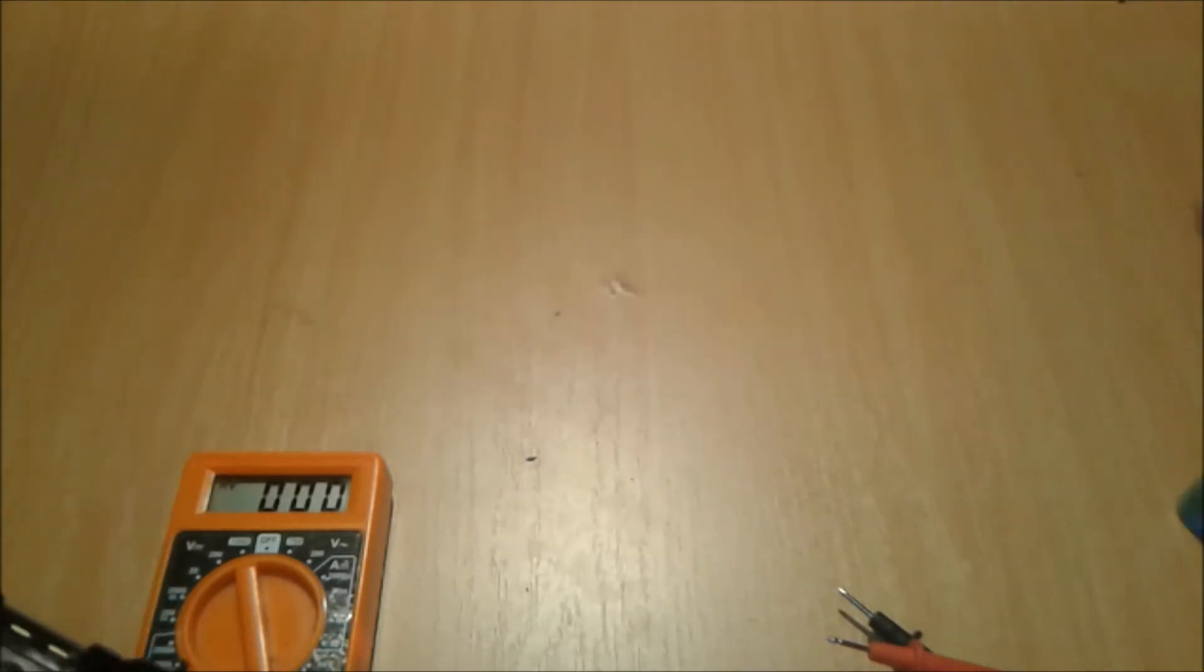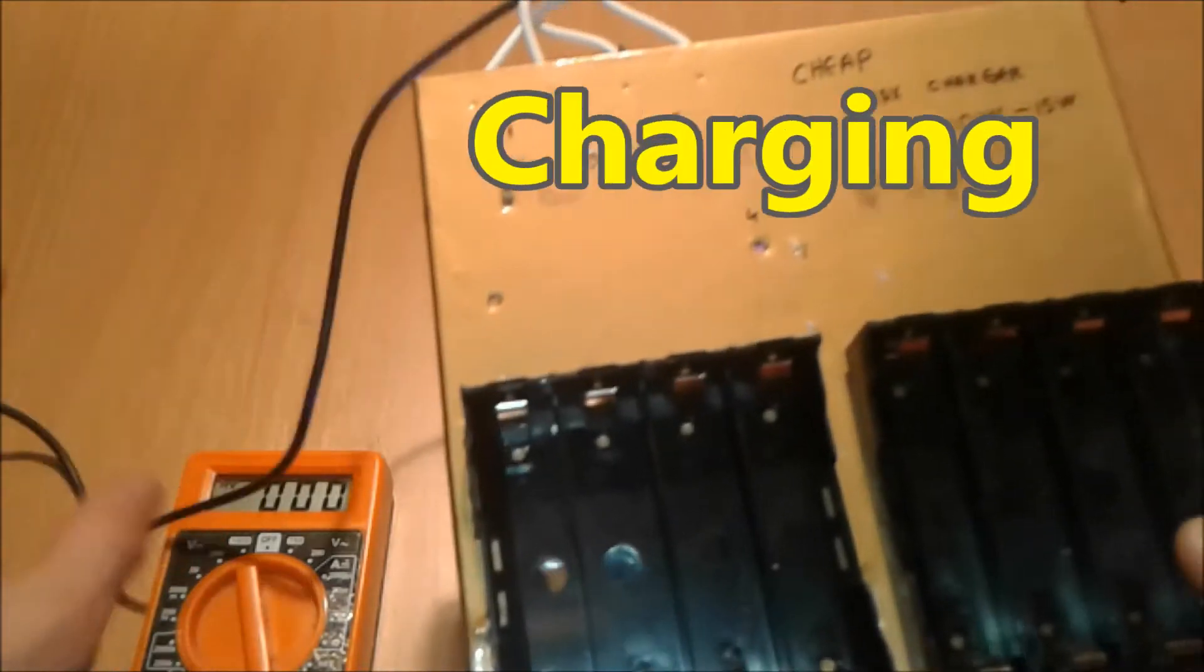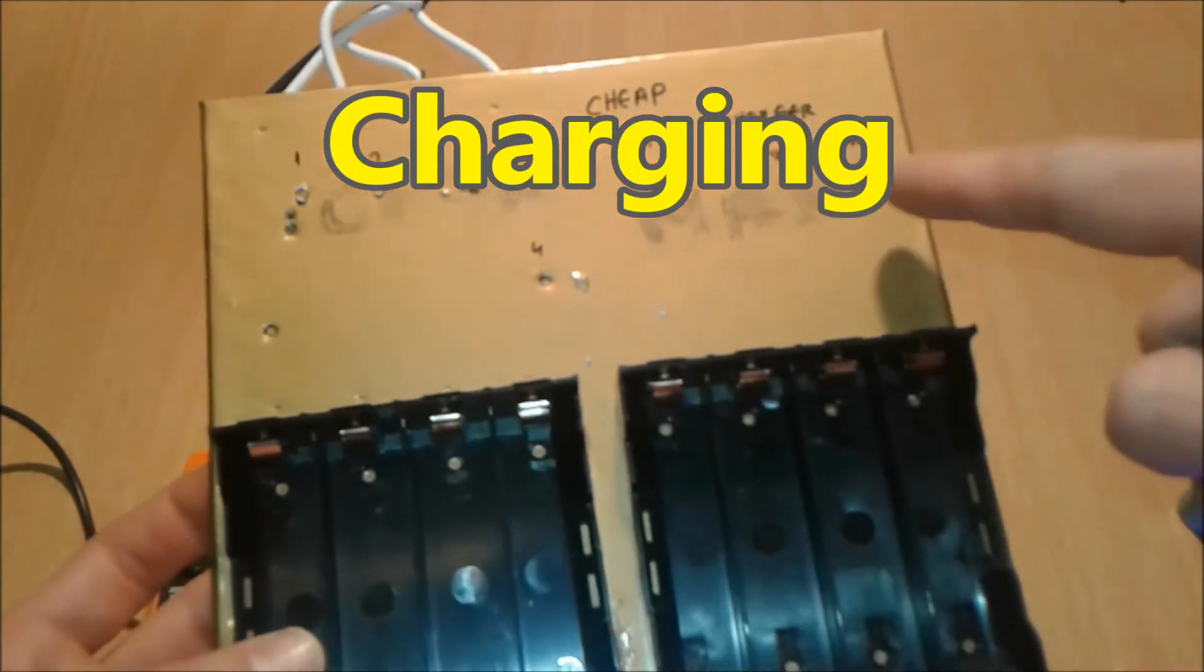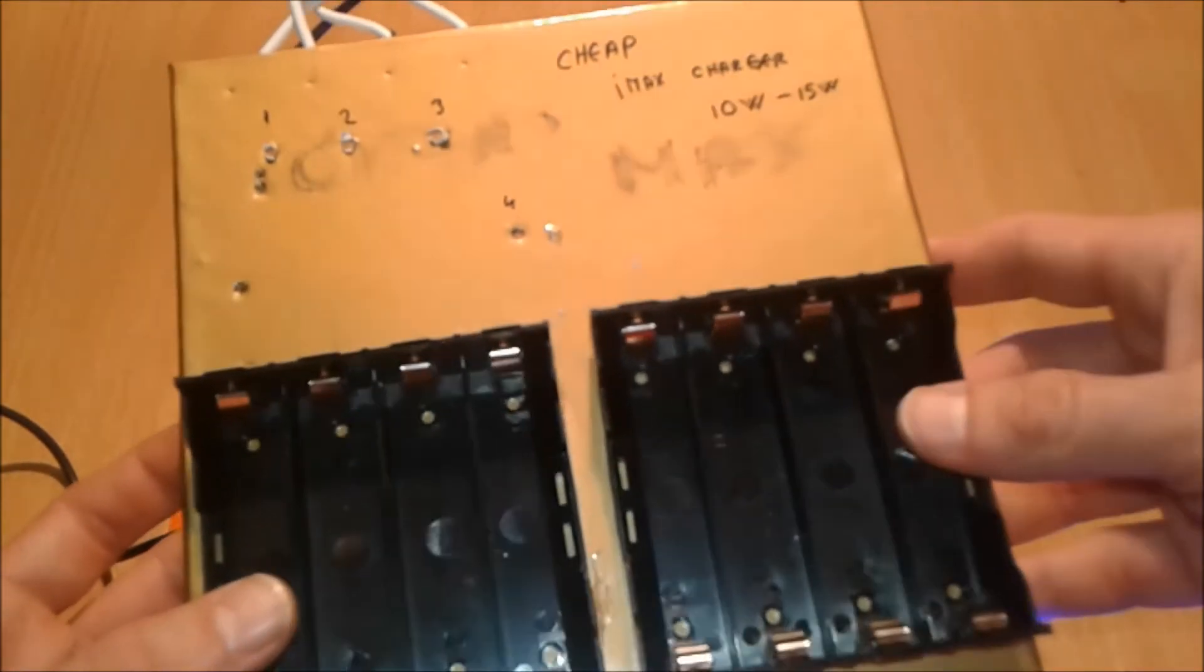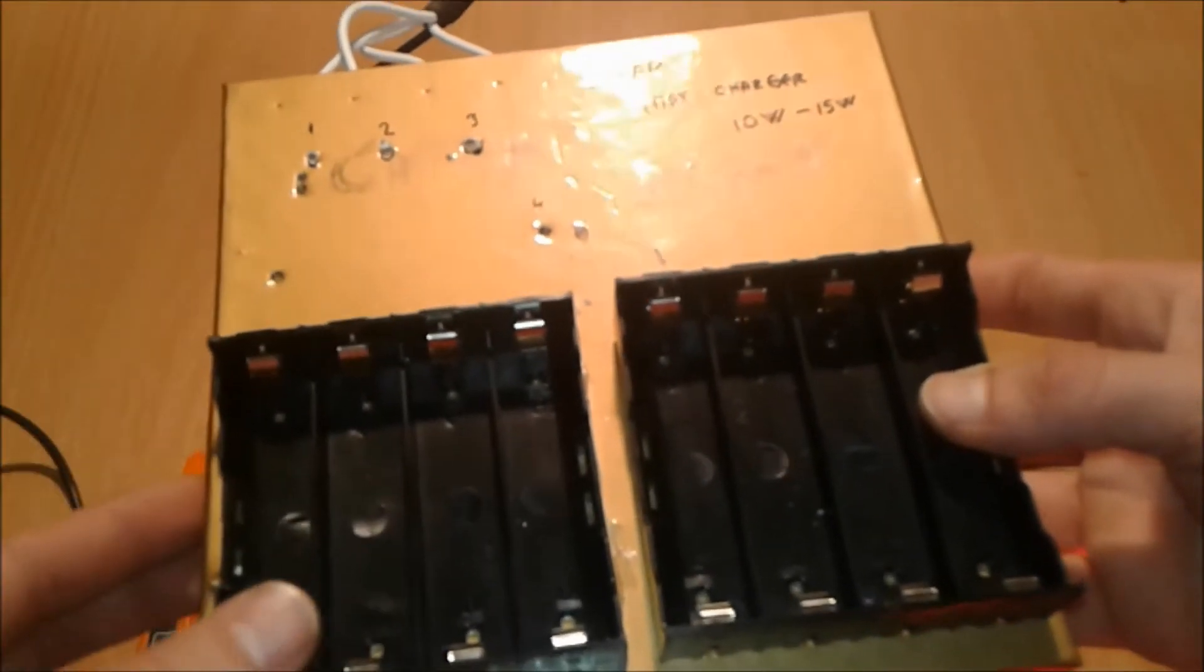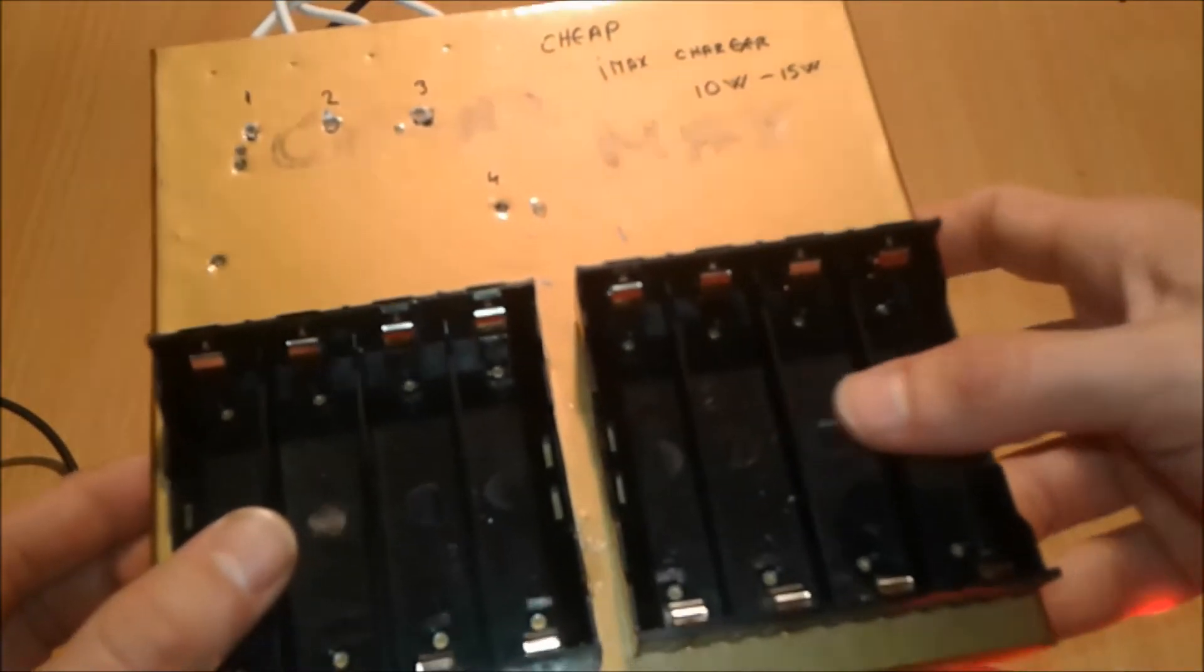To charge them, I have a link here somewhere on how to make a cheap charger, or you can buy a professional one, it's up to you depending on how much money you have to spend on this lithium-ion battery project of yours. For charging them, I choose this method: a cheap IMAX charger, a copy of the proper IMAX B6 charger which can charge four or eight cells at the same time.